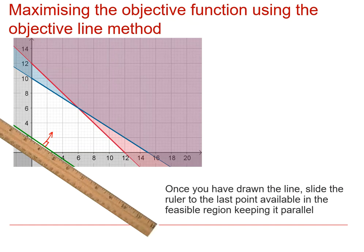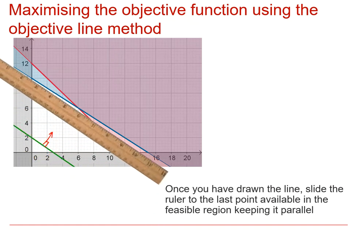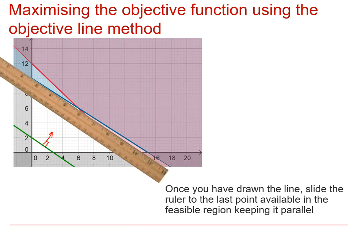...maintaining its direction until there's just a single point remaining that is on the line and is still in the feasible region. Now, it is important to make sure that you're accurate there. If you need to, then draw more lines further up, plotting them accurately, making sure that the gradient is equal to the gradient of this line, which you can obtain by rearranging the equation if you need to.